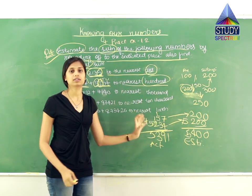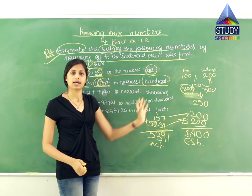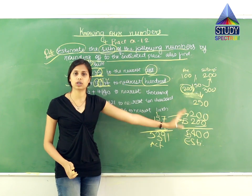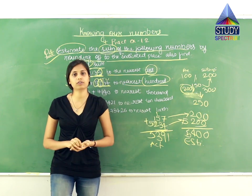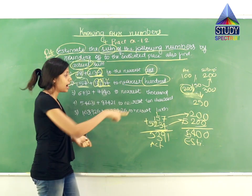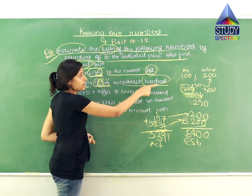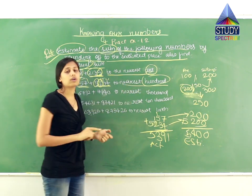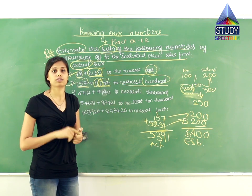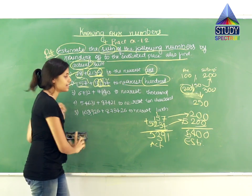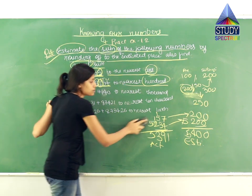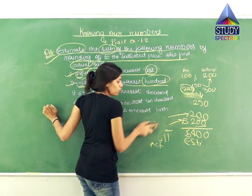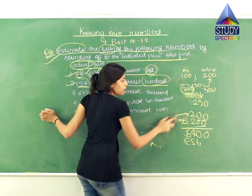So to summarize: estimation means finding the actual and estimated values. You have to find it in hundreds, just like in the first question it was in tens.